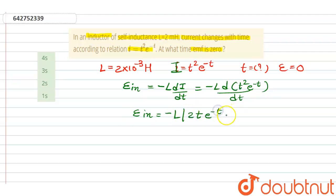After differentiating these values, we will get minus L mod of 2t e power minus t minus t square e power minus t mod.